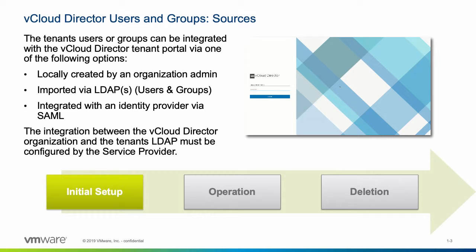Additionally, users can be integrated through an identity provider using SAML. While the integration with a SAML-based identity provider like Active Directory Federation Services or VMware Identity Manager can be done completely by the organization administrator, the integration between the vCloud Director organization and the tenant's LDAP must be preconfigured by the service provider.